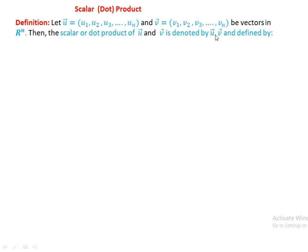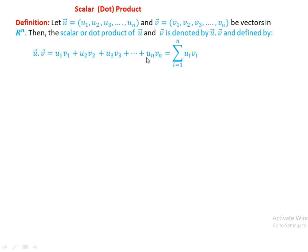The scalar or dot product of u and v, denoted u·v, is defined as: u1·v1 plus u2·v2 plus u3·v3 plus ... plus un·vn.